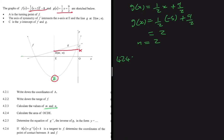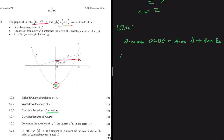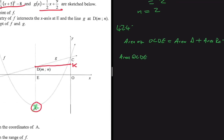Now we have triangle KDE and a rectangle below it. The x-coordinate of K is 0, and the y-coordinate of K equals the y-coordinate of D, which is 2. So the area of OCDE equals the area of the triangle plus the area of the rectangle.